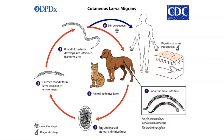These infectious filariform larvae can survive up to 3–4 weeks in favourable environmental conditions. When humans contact the infectious filariform larvae, it can penetrate into the skin, and because it cannot further mature in a human host, it migrates aimlessly in the human skin epidermis and can travel several centimetres a day.